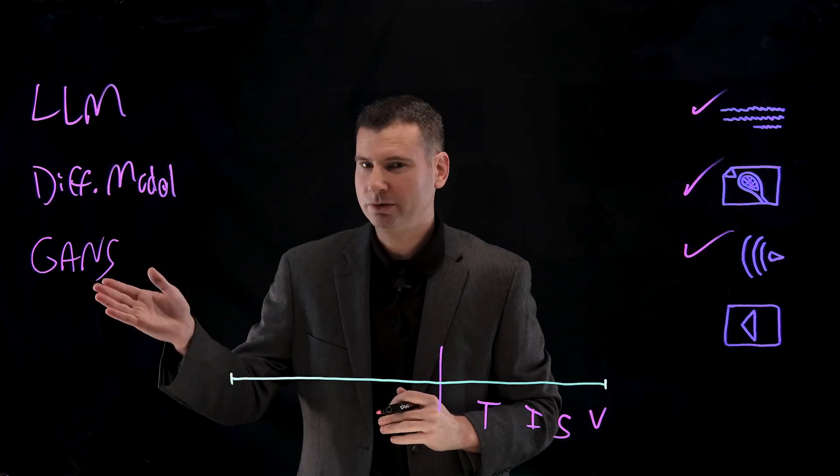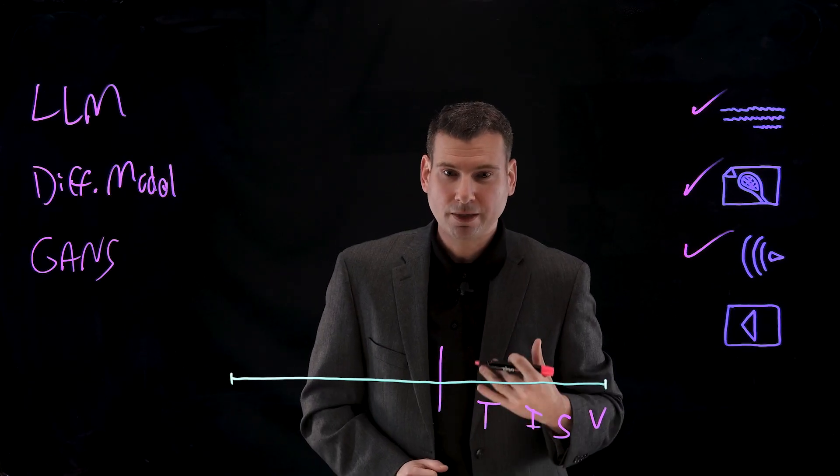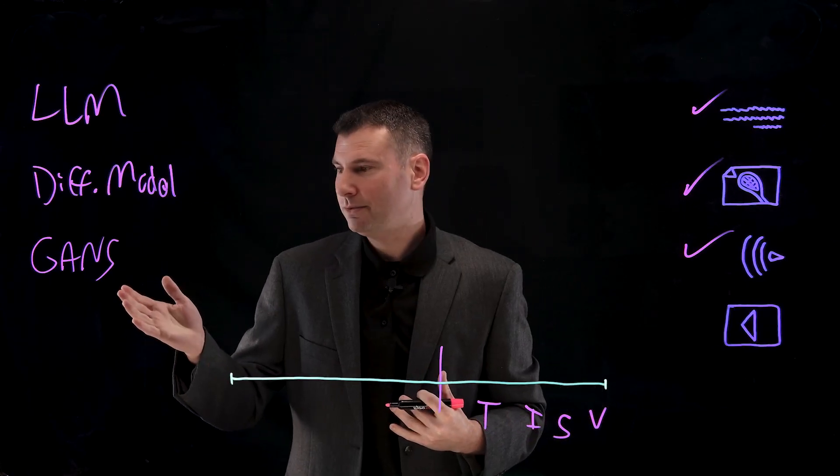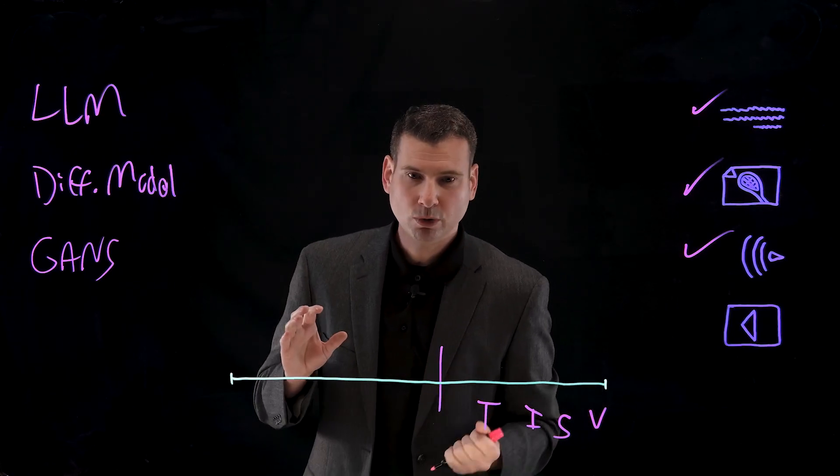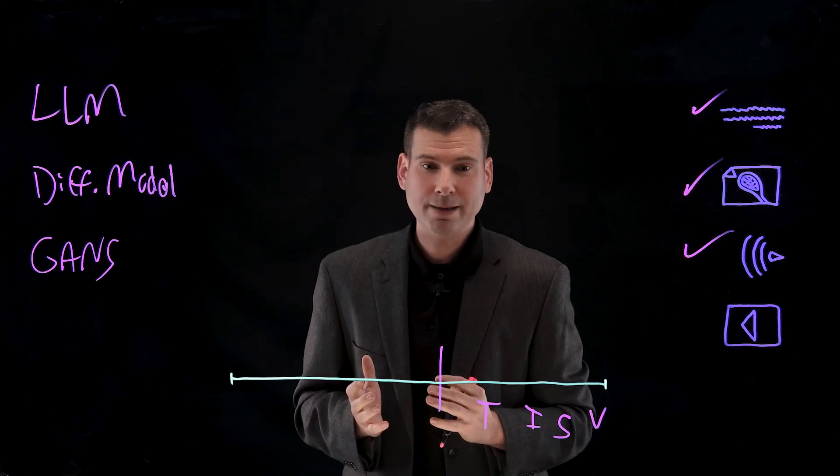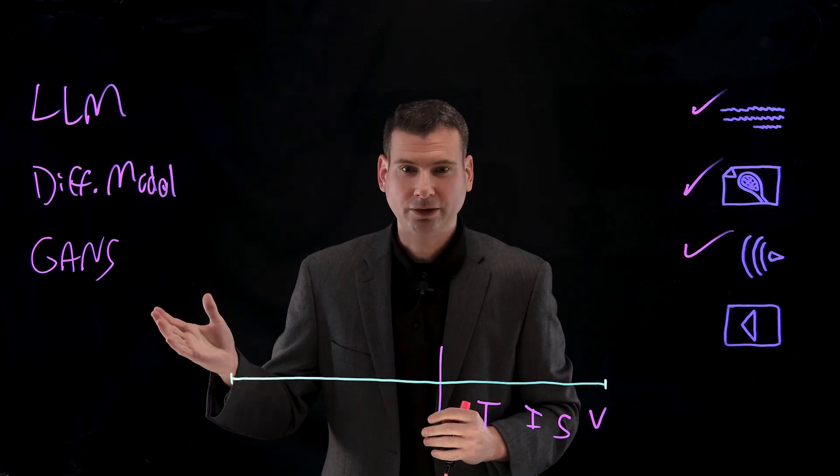We can take those pieces and build what are called generative adversarial networks or GANs. We have a generator that produces the novel sound, and then we have a discriminator. It wants to discern between what's been produced and what is real. If it can't discriminate between the two, the algorithm has done its job.